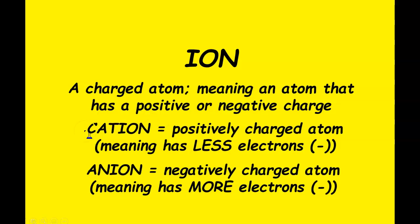If the ion is positive, it's called a cation — a memory trick is that if cats make you happy, that's a cation, meaning you have fewer electrons and more protons. If the ion is negative, it's called an anion, meaning you have more electrons than protons. This is vocabulary you need to know. You won't necessarily be tested on it in the first quiz, but you will need to know what ions are. Please reach out if you have any questions.